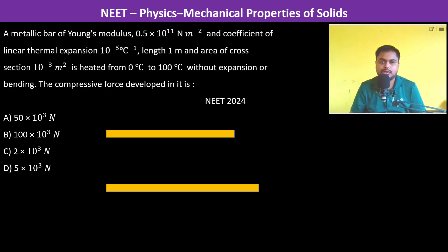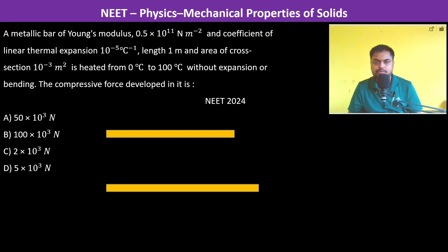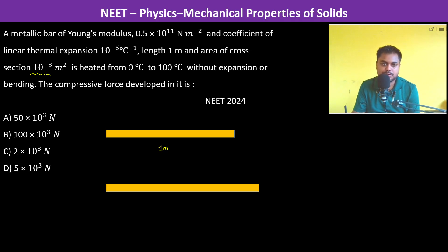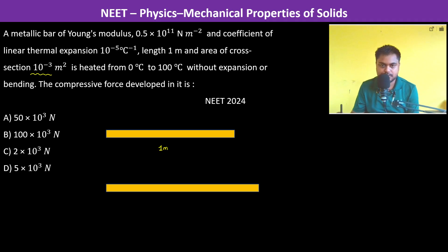A metallic bar with Young's modulus Y = 0.5×10¹¹ N/m², coefficient of linear thermal expansion α = 10⁻⁵ per degree centigrade, length L = 1 meter, and area of cross-section A = 10⁻³ m² is heated from 0°C to 100°C without expansion or bending.